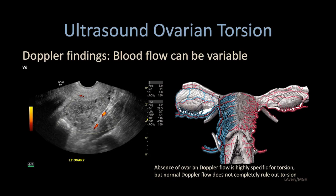The complex blood flow of the ovary makes evaluation of blood flow difficult in ovarian torsion. Both the laterally oriented ovarian gonadal arteries and the medially oriented uterine arteries contribute. Here we have an enlarged ovary, heterogeneous in echo texture with multiple small peripheral follicles, and on this very sensitive power Doppler image, we see no blood flow within the ovary. That is an ovarian torsion.